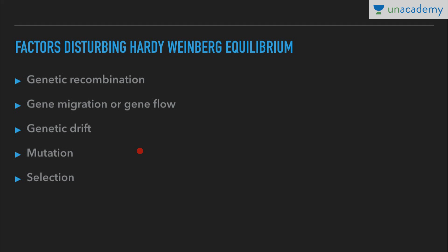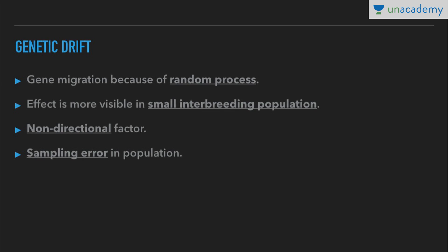This change in frequency of alleles in a population is interpreted as evolution. Genetic drift is the change in gene frequencies in a gene pool due to random processes such as gene migration. Its effect is more visible in small interbreeding populations. It is a non-directional factor and is also known as sampling error in a population, and it operates only in small populations.